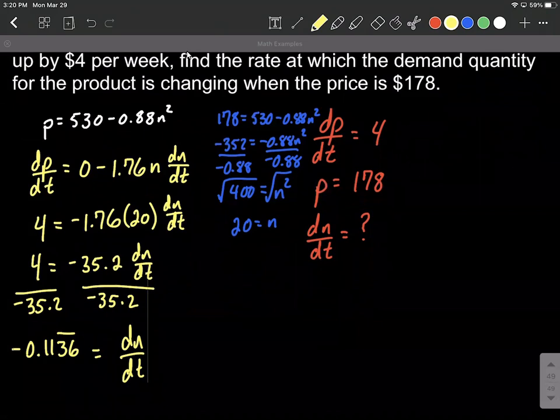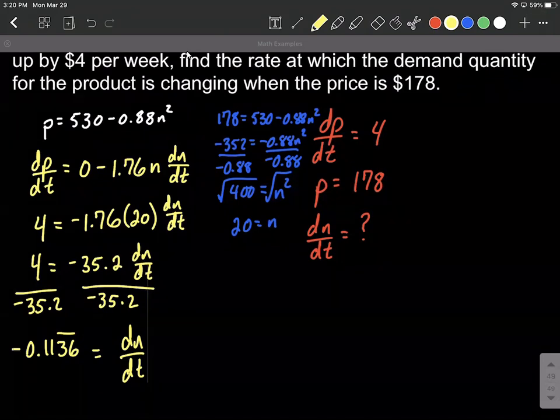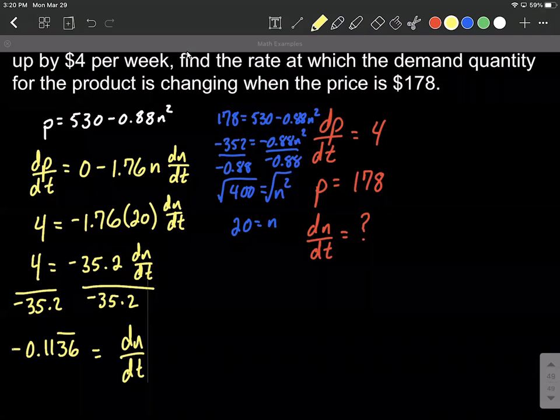All right, so as you get going on these, identify all the information that you're given. I wrote that off to the right in red. Then do partial derivatives with respect to time. We did that in yellow. And then if you have to find any other information, like in this case, we didn't know the quantity N. We plugged in the price point that we were given into the original function. Worked that out in blue. Plugged everything in. Solved down for the dN/dt. So that's how we do it. Good luck with them.